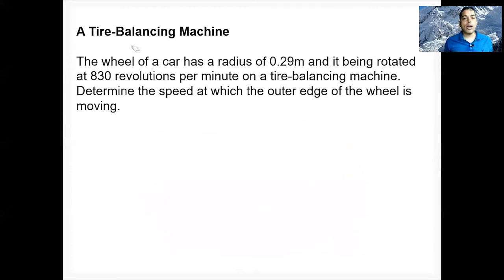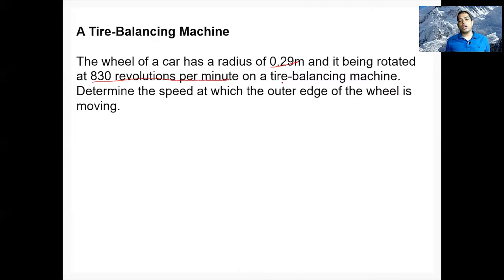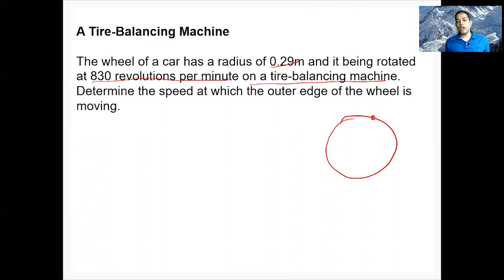Now let's do a problem: a tire balancing machine. The wheel of a car has a radius of 0.295 meters and it is being rotated at 830 revolutions per minute on a tire balancing machine. Determine the speed at which the outer edge of the wheel is moving.